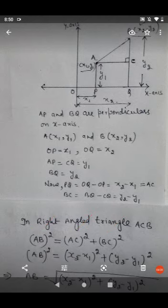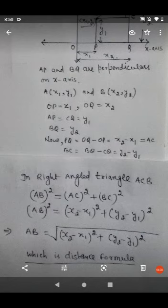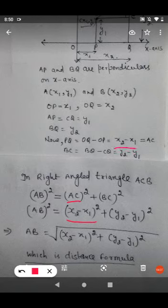Now, substituting the values, we have AC is equal to x2 minus x1. So it will become x2 minus x1 whole square. Similarly, the value of BC is y2 minus y1. So on substituting the value, we will get y2 minus y1 whole square.